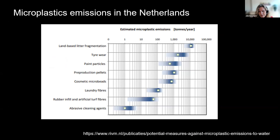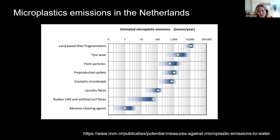So where are these microplastics coming from? This is an overview from a recent report in the Netherlands, but I don't think the Netherlands is much different than many other countries. We're talking about tons and tons of microplastics — small plastic particles being produced every year. The major source is actually the fragmentation of plastics that have ended up in our environment, including food packaging. Other important sources include the wear and tear of automobile tires, paints, the production of plastic pellets, microbeads in cosmetics, and textile fibers — which are really understudied up till now.